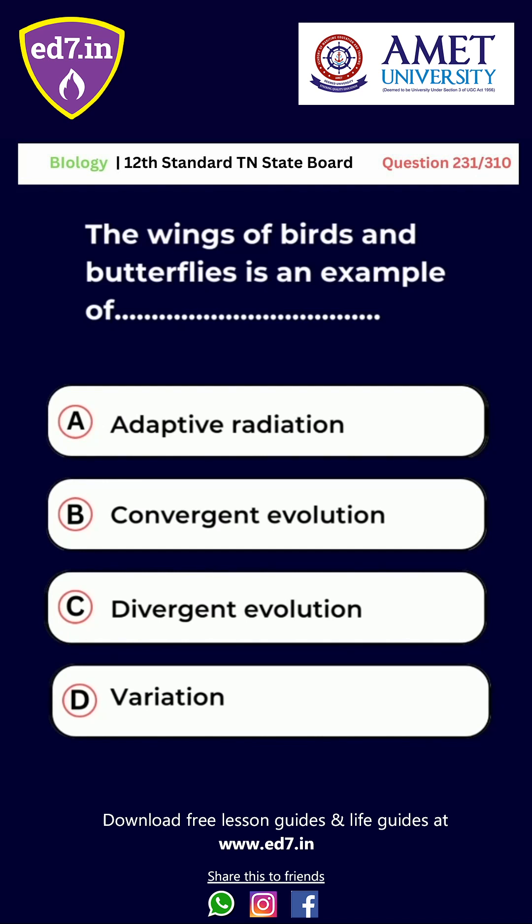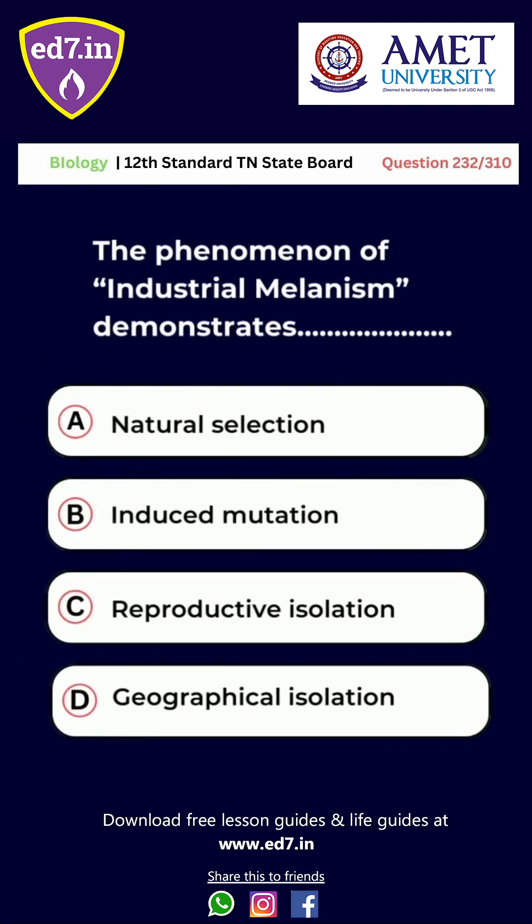Question number 232: The phenomenon of industrial melanism demonstrates A. Natural selection. B. Induced mutation. C. Reproductive isolation. D. Geographical isolation. The right answer for this question is option A, natural selection.